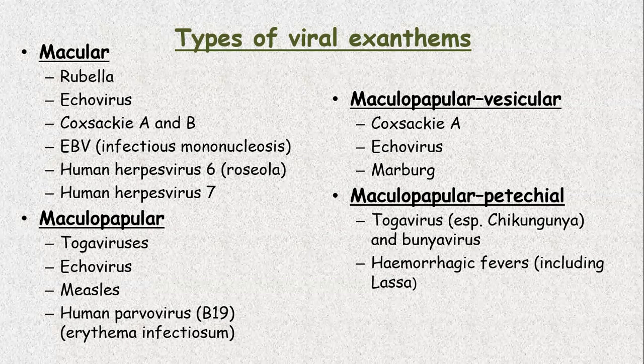The second type of exanthem is a maculopapular rash — macules as well as papules. The main virus causing this kind of rash is the measles virus, and then human parvovirus B19, the disease it causes being erythema infectiosum. In addition, toga virus and echovirus also cause a maculopapular rash.